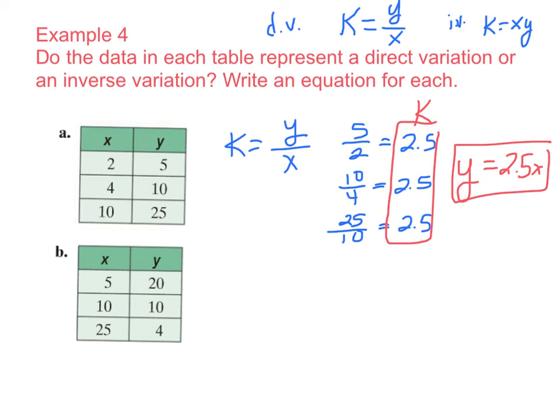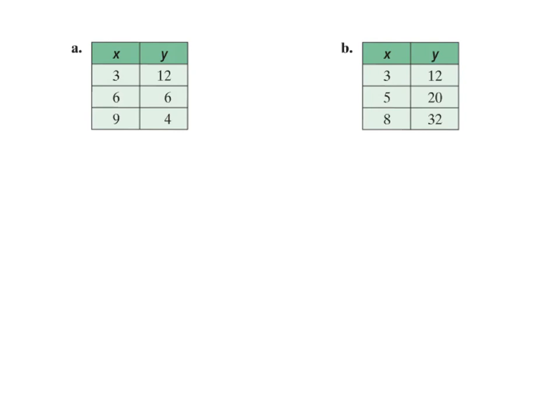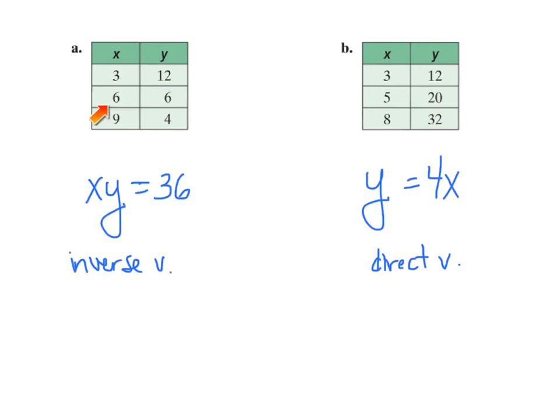b, multiply x and y together. 5 times 20, oh, it's 100. 10 times 10, 100. 25 times 4, 100. So if we multiply each of these together, we get our value of k. The value of k is what? It's 100. So our equation would be xy equals 100. I want you to pause the video and do these two on your own. If you did it correctly, you would find out that a is inverse variation, and our equation would be xy equals 36, and b is direct variation, and that would be y equals 4x.